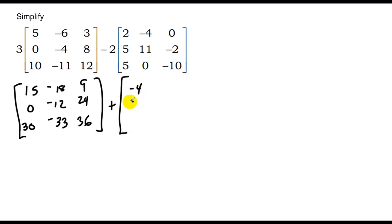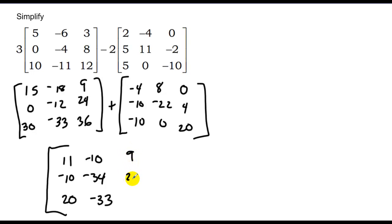So negative 4, negative 10, negative 10, 8, negative 22, 0, 0, 4, and 20. Then I add these up, corresponding elements. I have 11, negative 10, 20, negative 10, negative 34, negative 33, 9, 28, and 56.